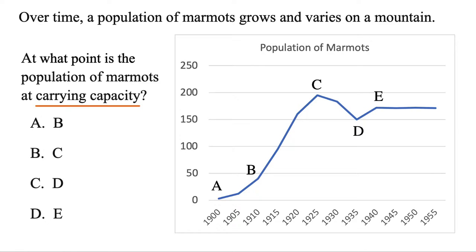If you're asked to find the carrying capacity, it's just where the graph levels out. Or in other words, where the population stabilizes. So in this case, E, that's the point where that happens, so that is the carrying capacity. And the number of marmots is just going to maintain at a steady level there.